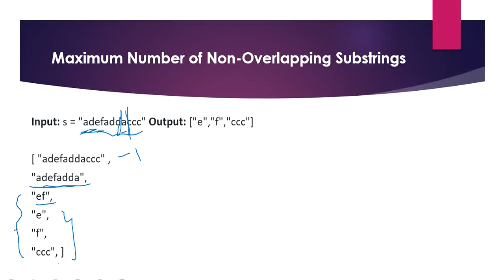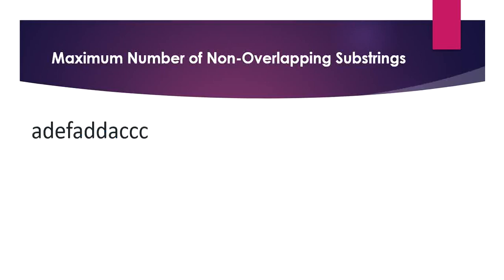How are we going to approach this? We have four steps that our algorithm will perform to find these non-overlapping substrings. Rule two — a substring should have all occurrences of a character — is key. If a substring starts with 'a', it has to include all characters up to the last index of 'a'. If a substring has the character 'd', it has to cover all characters up to the last 'd'. So we need to know the starting index and ending index of any substring we create.